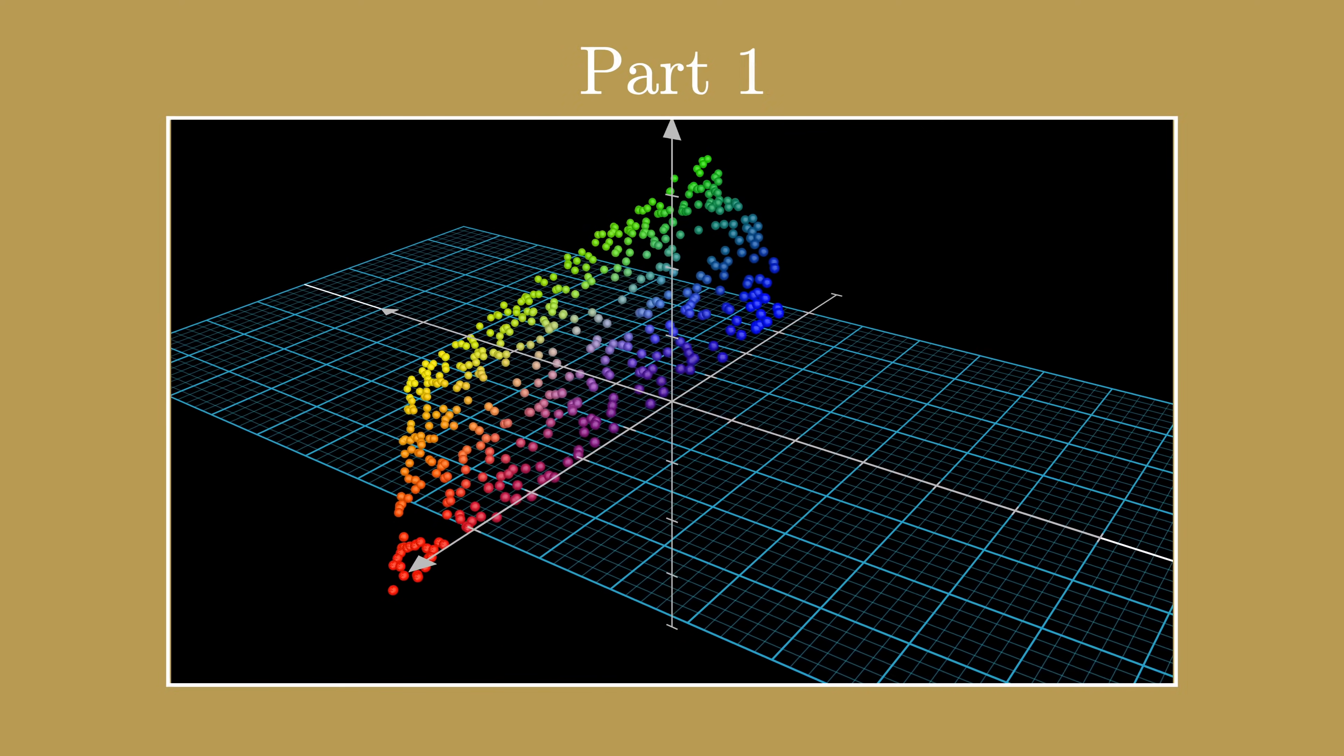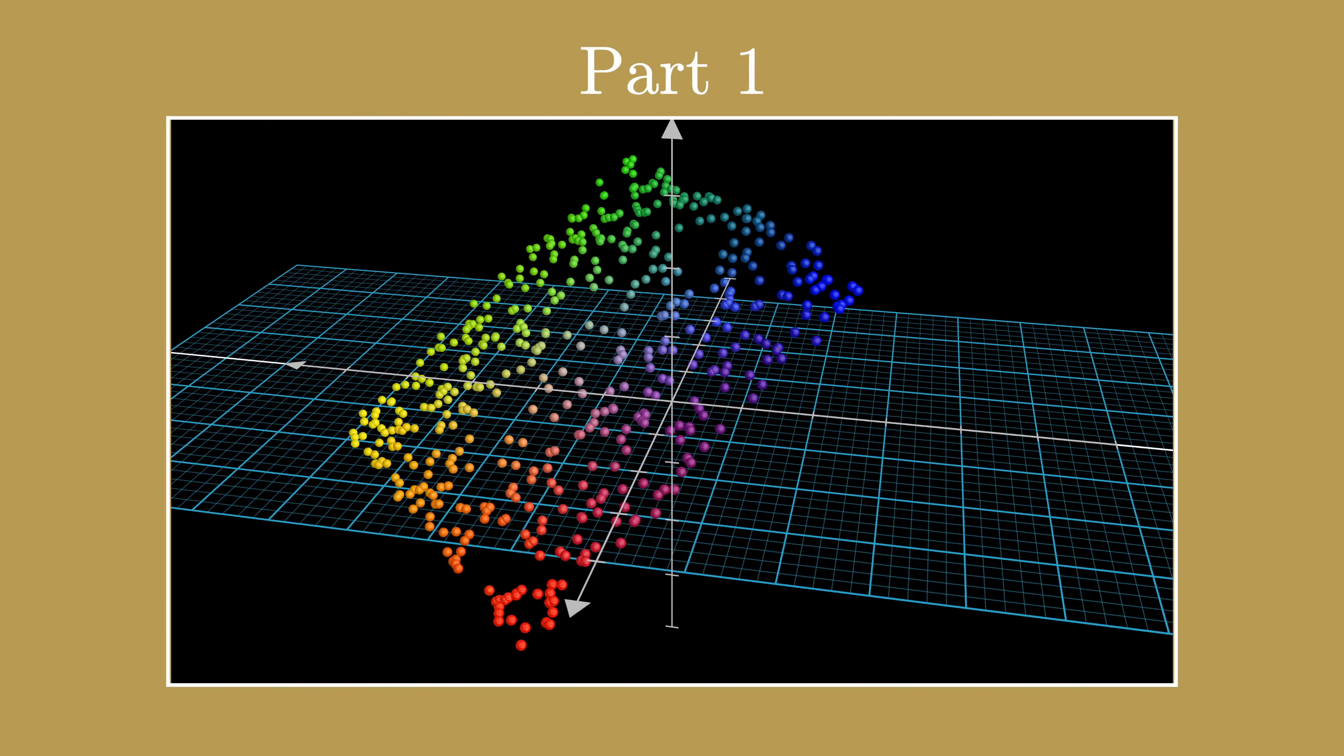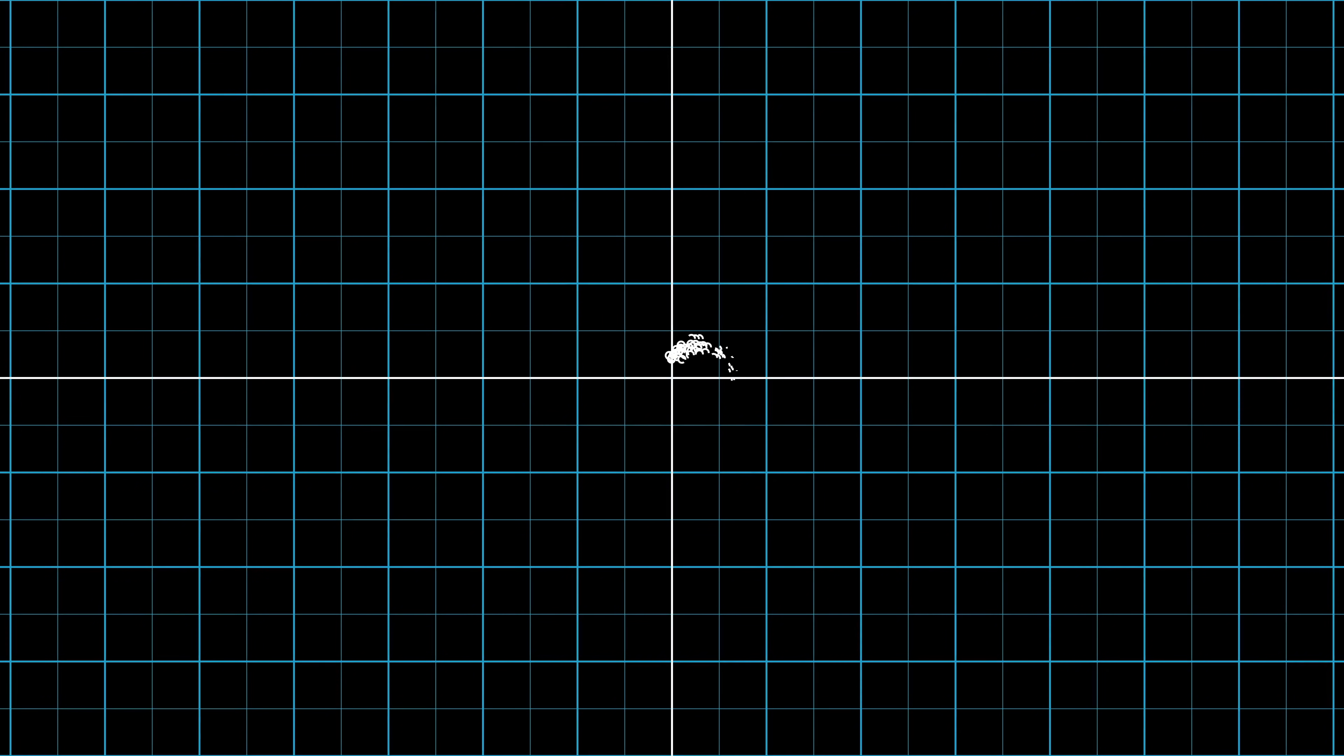So in this video, we're going to be looking at how a neural network classifies a set of data. Consider this dataset of five distinct spirals. The goal is to determine which of the five branches a given x and y coordinate belong to.